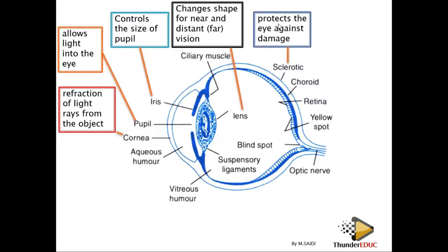Then we have the sclera, sometimes called the sclerotic. It is very important in protecting the eye against damage. The inner part of the eye is protected by the sclerotic layer.